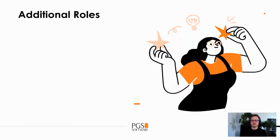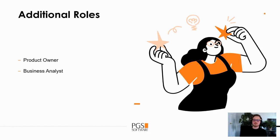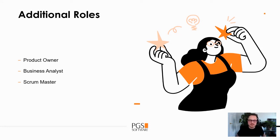There are also some additional roles. As your business and team grow, there will be someone who needs to take care of the whole product — a product owner. There will also be a business analyst needed at some point to filter and translate all incoming requirements for the team. And you'll probably need a scrum master to keep all the processes in the right order.